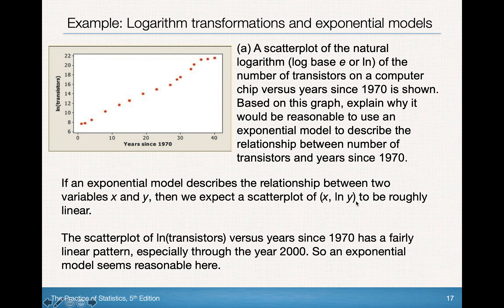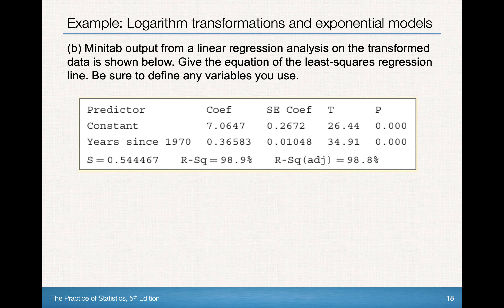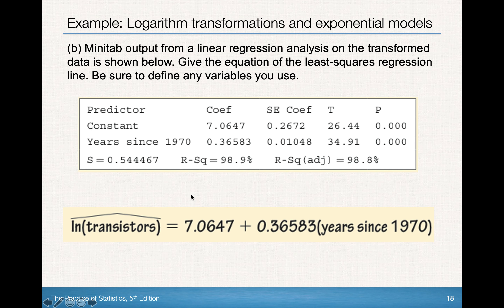We're looking at x (years since 1970) versus ln(y) (natural log of transistors). Here is the Minitab output for the linear regression of the transformed data. The least squares regression line is: ln(transistors-hat) = 7.0647 + 0.36583 · (years since 1970). The y-intercept is 7.0647 and the slope is 0.36583, which equals ln(b) from the exponential model. The x values have not been transformed — only the y values.